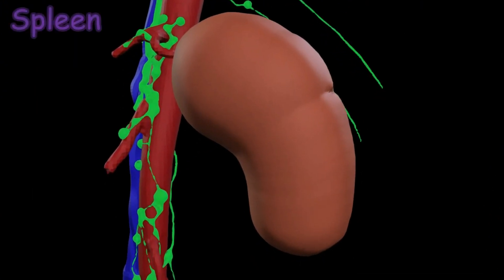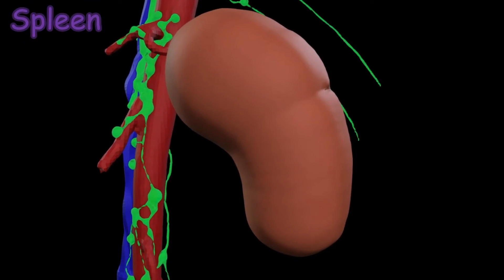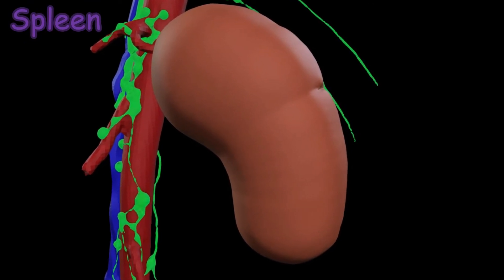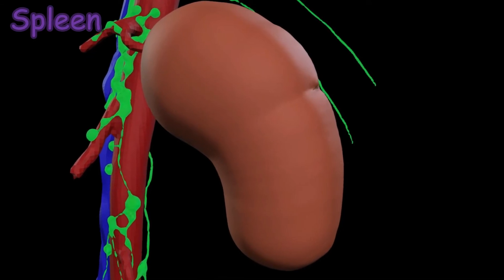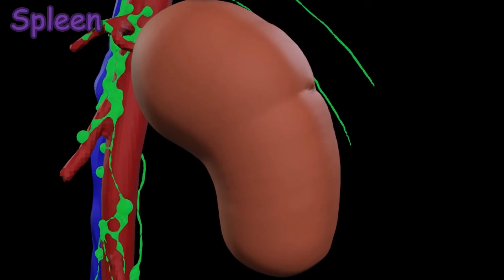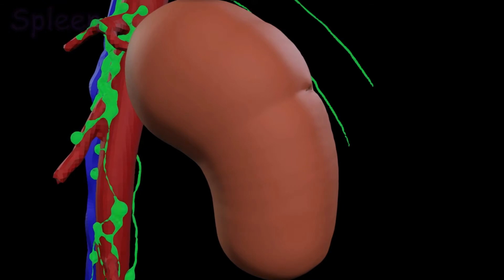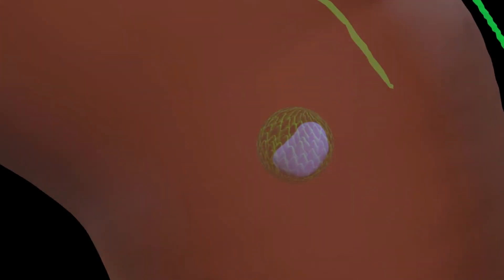The spleen is a fist-sized organ at the upper left of the abdomen, just behind the stomach. The spleen contains white blood cells that respond to any antigens collected from the blood. Immature B cells migrate from the bone marrow to the spleen to become mature B cells.